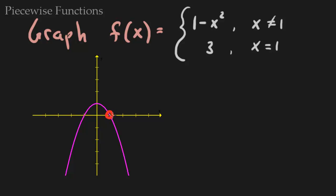So when you graph it, you should actually have it look like this. Notice that you look like 1 minus x squared everywhere except for when x is 1 — so there's where x equals 1, and it's blank. Because the other half of the piecewise function says that when x is 1, your y value should be 3. So it's actually saying graph the point (1, 3).